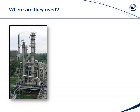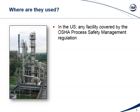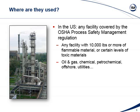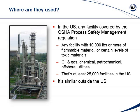Where are these systems used? Any high-risk process industry in general. In the U.S., the OSHA regulation — the Process Safety Management Regulation for Highly Hazardous Chemicals — was released in 1992 as a result of several serious accidents in the late 1980s. That regulation applies to any facility with 10,000 pounds or more of flammable materials, combustibles, or certain levels of toxics — typically oil and gas, chemical, and petrochemical industries. OSHA estimates that's 25,000 facilities in the U.S. alone. Similar regulations exist in other countries, and those regulations refer you to industry standards that have been developed on this subject.